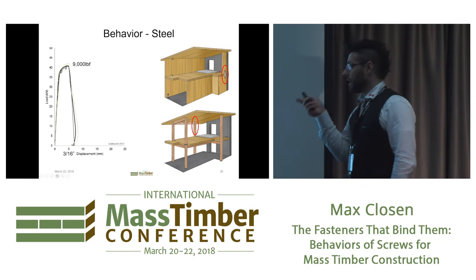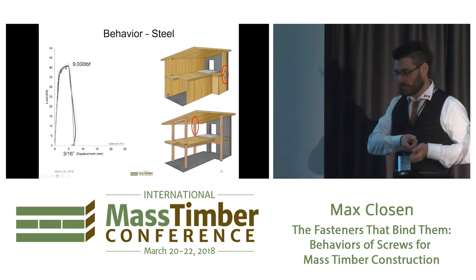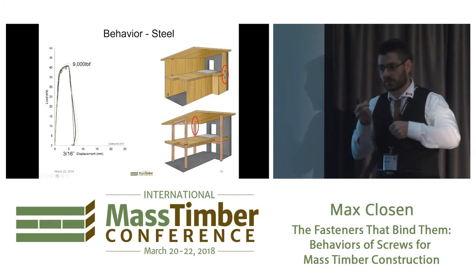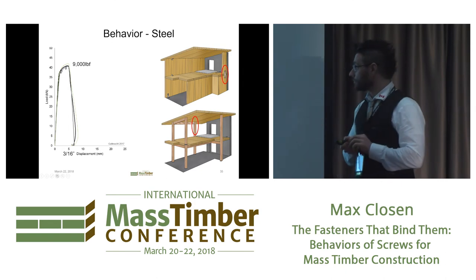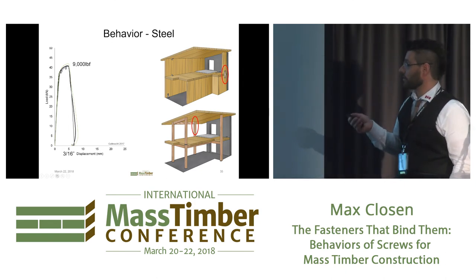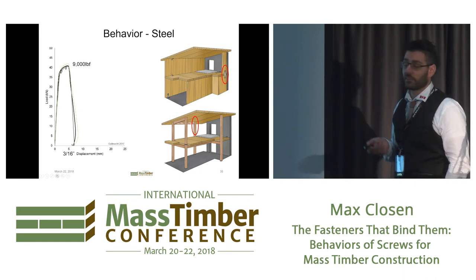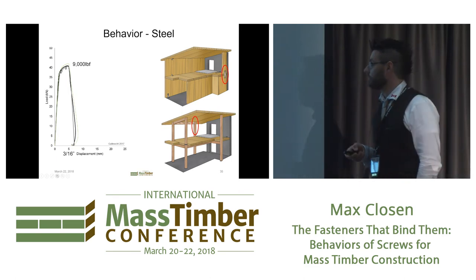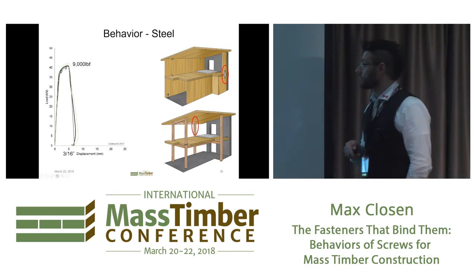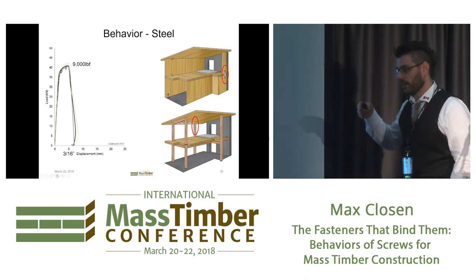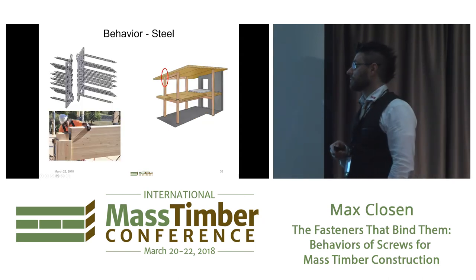The opposite scenario is when fasteners fail in tension because they are embedded so deep in the wood that they do not pull out anymore, and we restrict the connection capacity with the steel tensile strength of the wood screw. For those joints, the behavior is very brittle - only about 3/16-inch displacement at around 9,000 pounds of load - essentially no deformation capacity. Whenever we are designing these systems, we need to make sure we have some other ductile element that can provide the respective ductility.